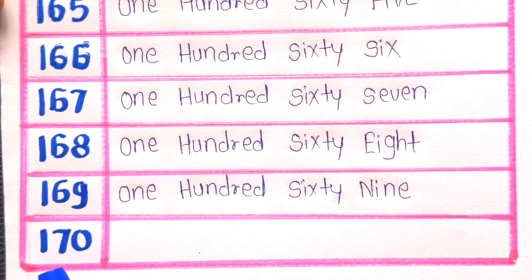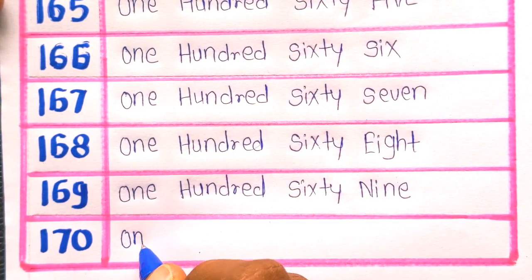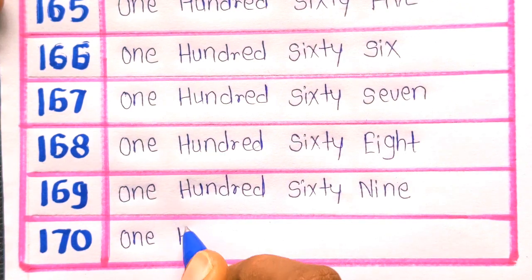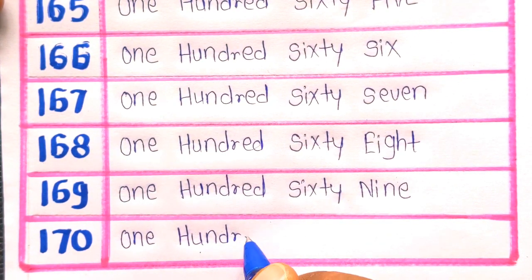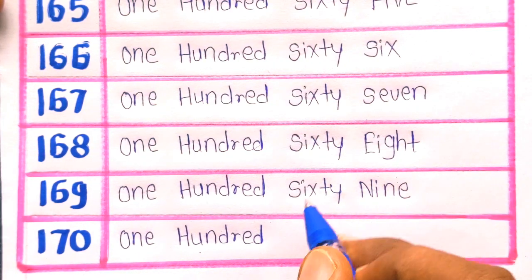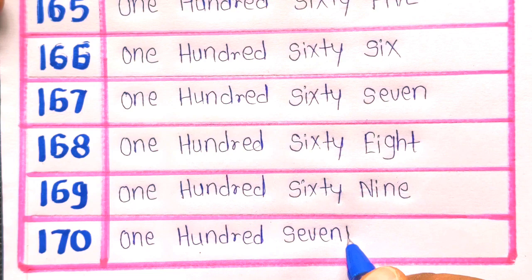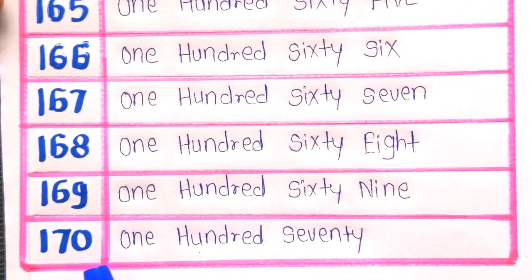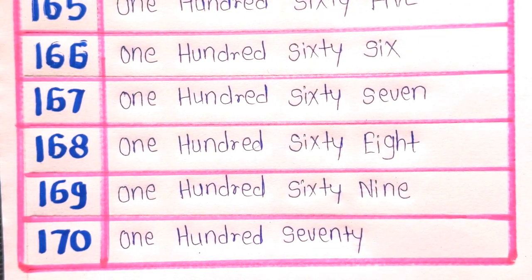And next is 170: O-N-E, ONE, H-U-N-D-R-E-D, HUNDRED, S-E-V-E-N-T-Y, SEVENTY. 170.